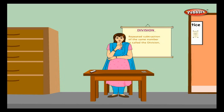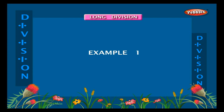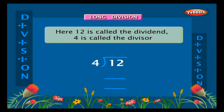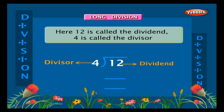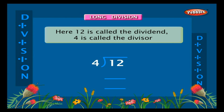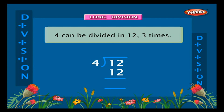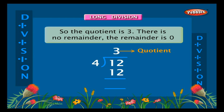Long division. After simple division, let us now learn long division. Example one: divide twelve by four. Here twelve is called the dividend and four is called the divisor. We will have to find the quotient. Using four tables: four threes are twelve, so four can go into twelve three times. The quotient is three.